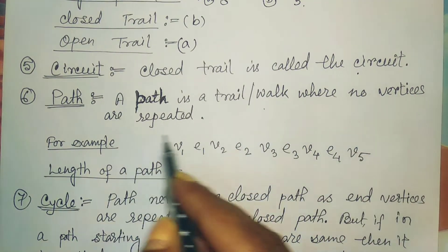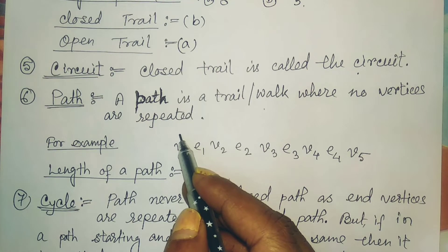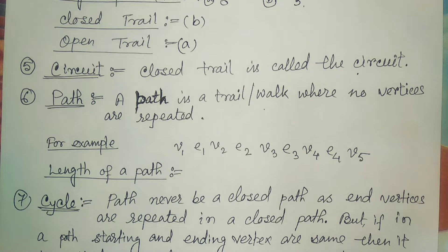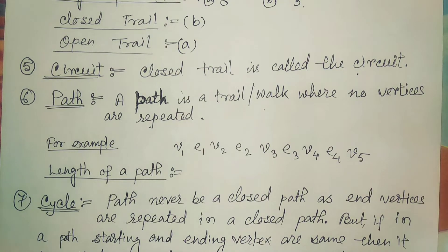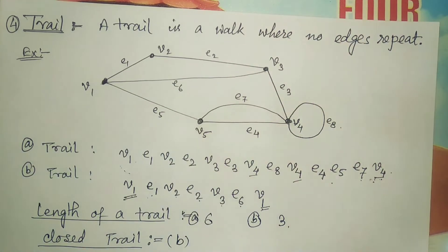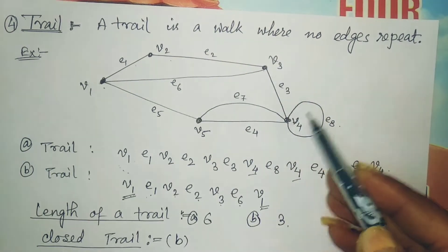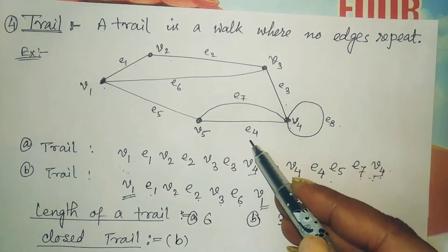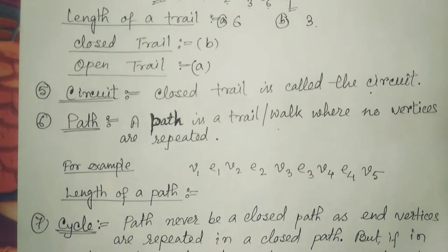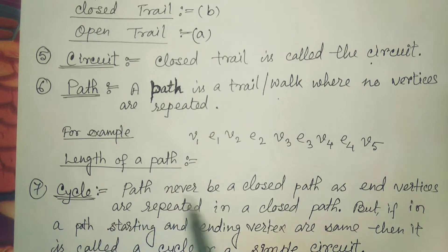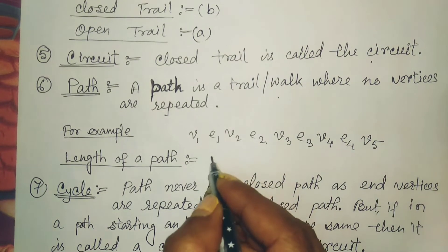A path is a trail or walk where no vertices are repeated. In a trail, no edges are repeated; in a path, no vertices are repeated — and if no vertices are repeated, edges are definitely not repeated either. For example, from the same graph: v1, e1, v2, e2, v3, e3, v4, e4, v5 — this is a path with length 4.